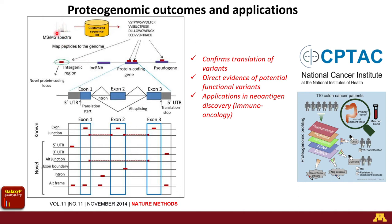This slide walks through that process: we take MS/MS spectra from peptide sequences recorded from the same sample, use this customized protein database for matching, and ultimately get peptide sequences that match those spectra. Using bioinformatics, we map these to the genomic regions that code for those particular peptides, helping us understand the nature of the proteins expressed in our sample. We can potentially identify proteins expressed from regions of the genome not previously predicted to be coding — novel protein products.